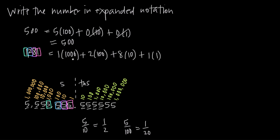If you do the computation — one times 1,000 is of course 1,000; two times 100 is 200; eight times 10 is 80; and one times 1 is 1 — and if you add these all together, you'll get 1,281, which is why expanded notation works.